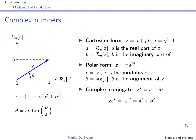Before we go on, a little reminder on complex numbers. Complex numbers are based on the equation J squared equals minus one — there is no real solution to this, so we define J as the square root of minus one. Any multiple of J is called an imaginary number. Adding a real number A to an imaginary number JB gives a complex number Z equals A plus JB, where A is the real part and B is the imaginary part.